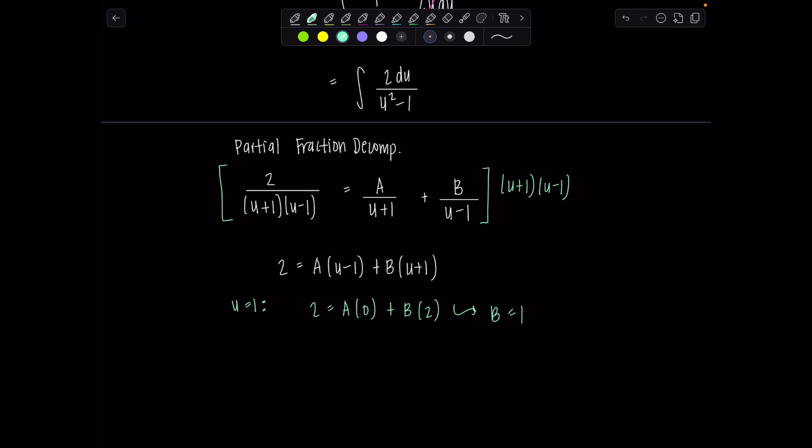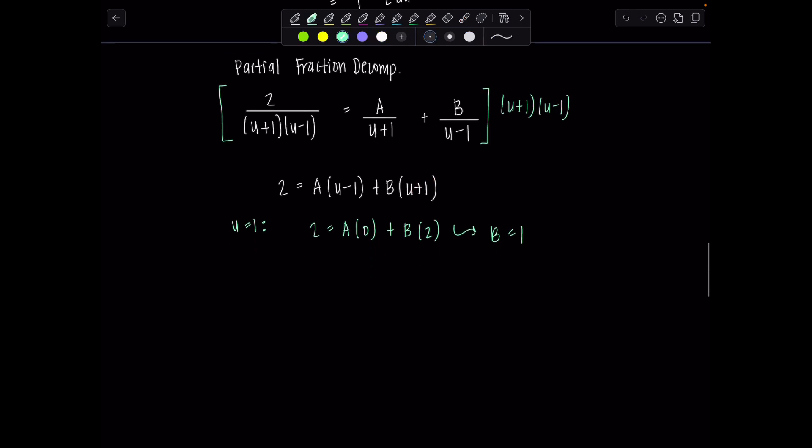And then to find a, we would just need to let u be negative 1, so that that term will go away. So then if u is negative 1, we have 2 equals a times negative 2 plus b times 0. So a is negative 1.